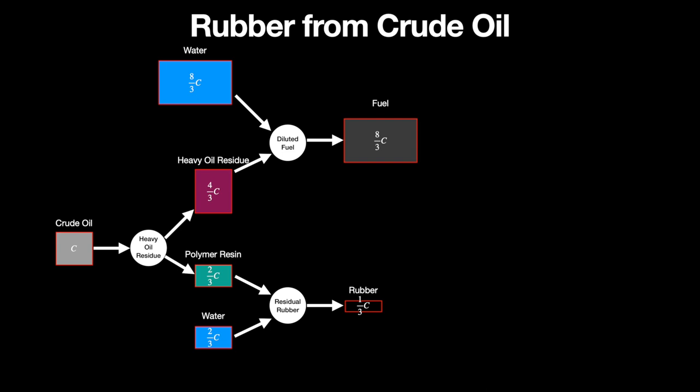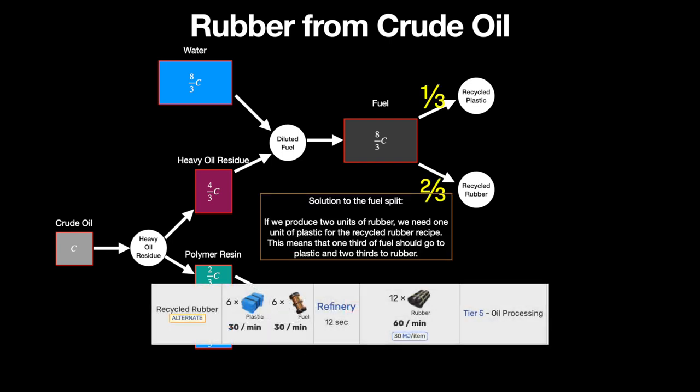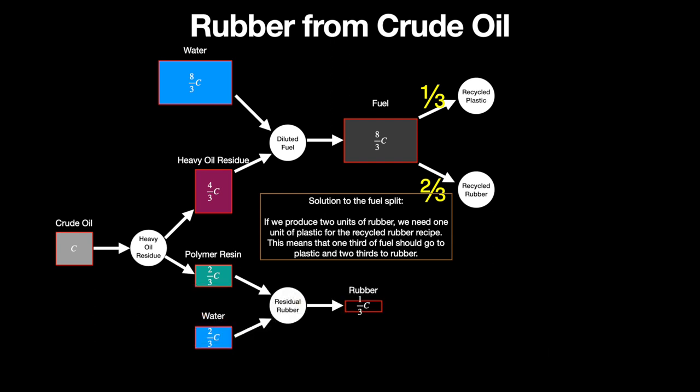The heavy oil residue is sent to blenders together with twice as much water. This produces 8/3 C fuel with the diluted fuel recipe. The big question is how should this be distributed between recycled plastic and recycled rubber? The way the recycled rubber and plastic recipes work is that you turn one of them to two of the other. So if we produce two units of rubber, we need one unit of plastic. This means that one third of the fuel should go to plastic and two thirds to rubber.